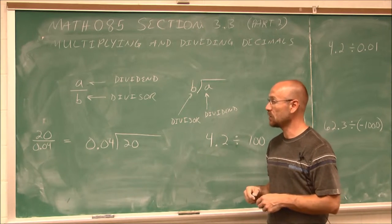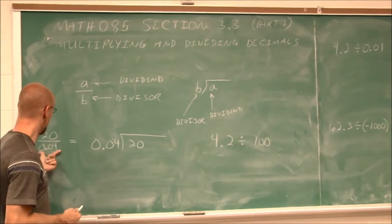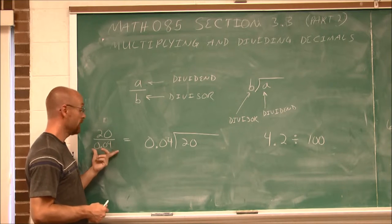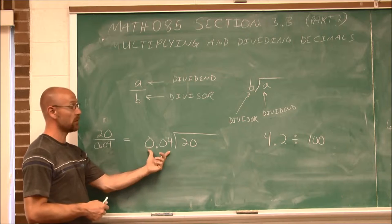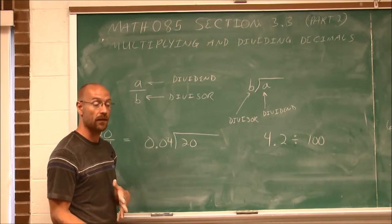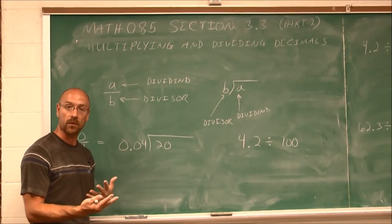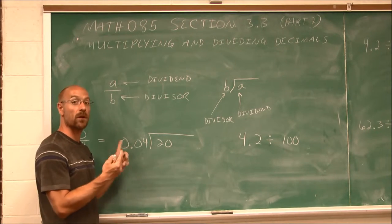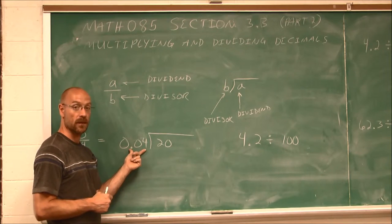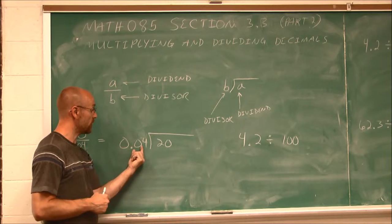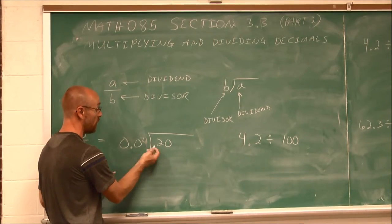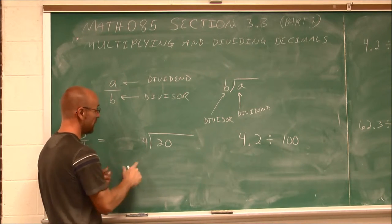Let's look at an example. We might have it written as a fraction initially: 20 divided by 0.04. Generally, we'd write it in long division form. With multiplication, we didn't worry about where the decimal would be until the end, but with division — since it's the inverse operation — we have to worry about the decimal right away. We can't divide using a decimal in the divisor; we have to eliminate it.